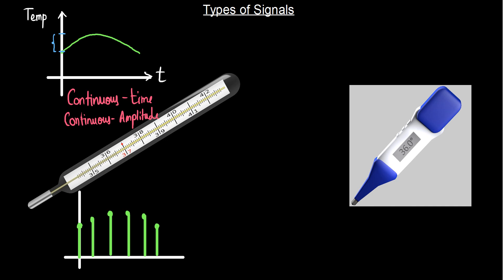What's new in the second case? The time is discretized. But the amplitude, that is the temperature, still remains a continuous quantity. The values here can be anything in the range provided. So although the time has been discretized and we are measuring values at different instances, the amplitude still remains continuous — the value at a particular instance can be any value in the continuum supported by the temperature scale. So in this case it is discrete time but continuous amplitude.